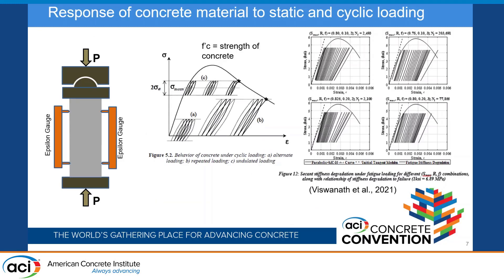In this slide I'm showing the cyclic loading on concrete. We have loading at top and we are measuring strain at two sides. This plot shows stress on the vertical axis and strain on the horizontal axis. The parabola is the stress-strain response from the monotonic test. The cyclic or fatigue loading can be compressive-tensile cycles or pure compression with different ranges.